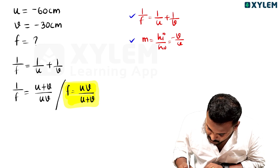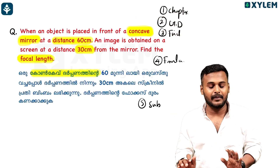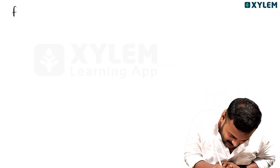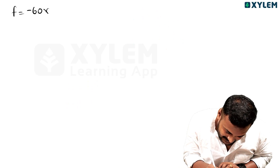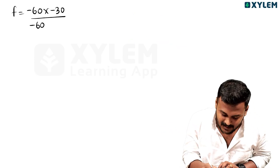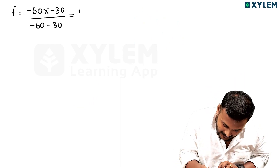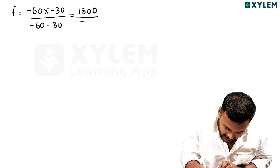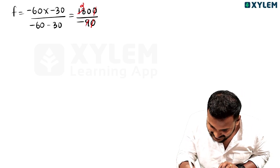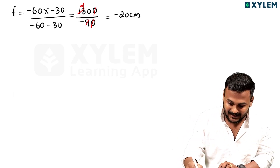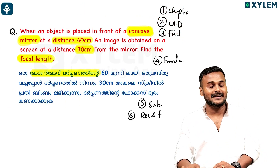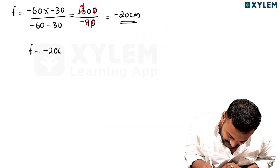The fifth step is substitution. F equal to U into V divided by U plus V. U is minus 30, V is minus 30. So minus 30 into minus 30, divided by minus 30 plus minus 30. That gives 900 divided by minus 60, so the result is F equal to minus 20 cm. Crystal clear.